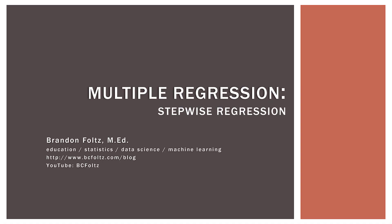So that wraps up this video on stepwise regression. Again, it's just forward selection and backward elimination combined into one process, so it's pretty easy to understand. In the next video, we'll talk about best subsets, which can get a bit more complicated. I hope you found this video helpful, I hope you learned some things, and I look forward to seeing you again in the next video. Take care. Bye-bye.